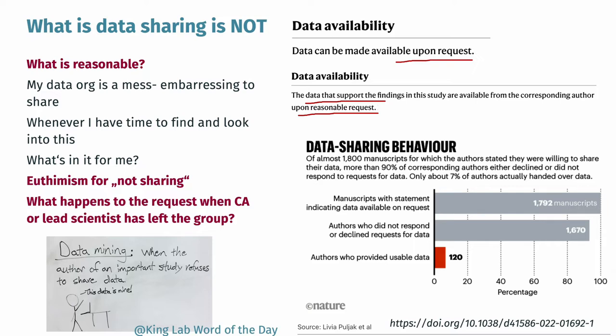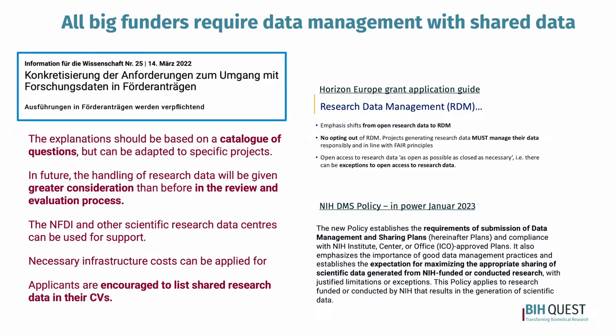With what we're going to talk about today, we want to avoid this — you want to be in the 10% and provide really usable data from your studies. It's becoming more apparent that funders like Horizon Europe, the NIH (also from 2023), our own DFG, and the BMBF are now requiring you, already in your applications, to say something specific about what you're going to do with your data, how you're going to share them, and how you're going to use NFDI. They even encourage applicants to list already shared research data in their CVs.